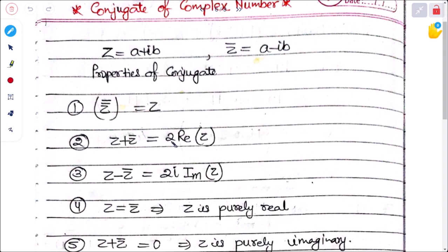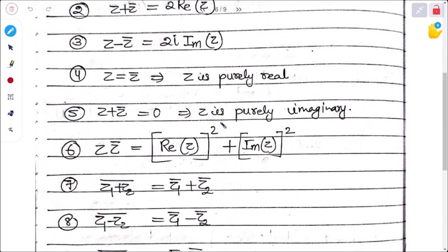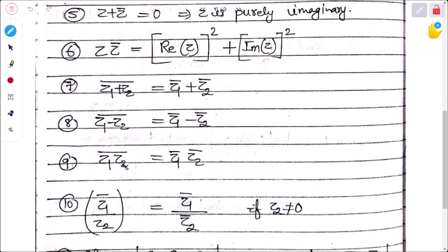Key properties of conjugates: z + z̄ = 2·Re(z); z − z̄ = 2i·Im(z); if z = z̄ then z is purely real; if z + z̄ = 0 then z is purely imaginary; z·z̄ = Re(z)² + Im(z)². Also: (z₁ + z₂)‾ = z̄₁ + z̄₂; (z₁ − z₂)‾ = z̄₁ − z̄₂; (z₁·z₂)‾ = z̄₁·z̄₂; (z₁/z₂)‾ = z̄₁/z̄₂ (z₂ ≠ 0).